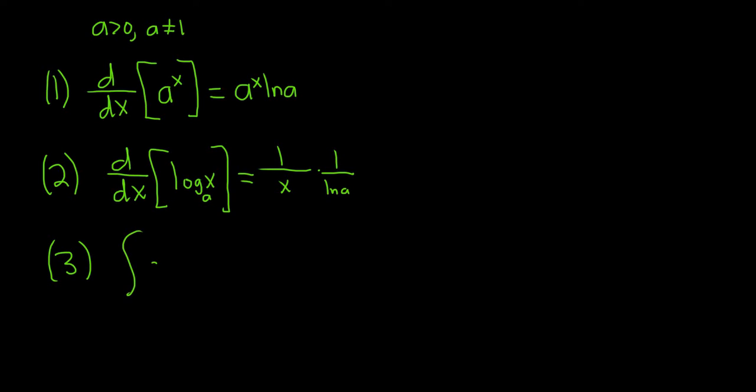And the third formula says that if we integrate a to the x with respect to x, well this one's pretty easy to memorize. When you differentiate you multiply by the natural log of a, so when you integrate you just divide by it. So it's 1 over ln a and then you have a to the x plus C, or just a to the x over ln a if you prefer to write it that way.